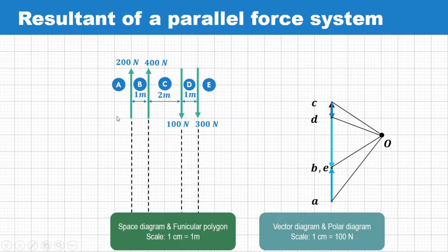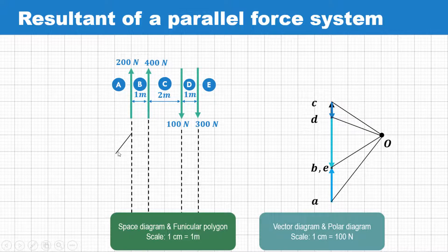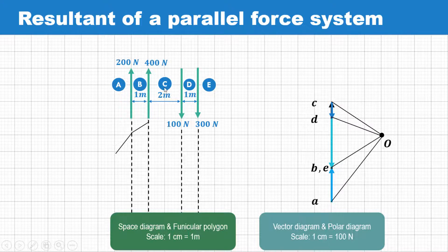In the space of A, we draw a line parallel to OA. In the space of B, we draw a line parallel to OB. Similarly, in the space of C we draw a line parallel to OC, in the space of D a line parallel to OD, and in the space of E a line parallel to OE.